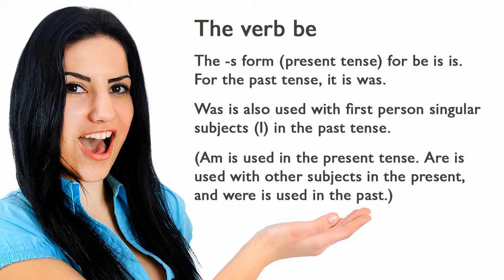The verb be: The S form in the present tense for be is is. For the past tense, it is was. Was is also used with first-person singular subjects — I — in the past tense. Am is used in the present tense. Are is used with other subjects in the present, and were is used in the past.